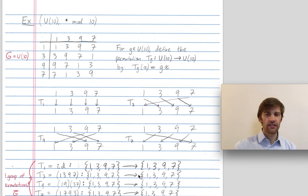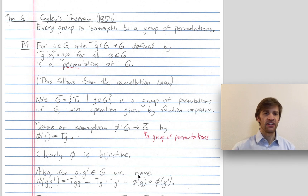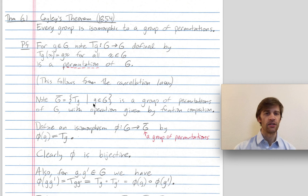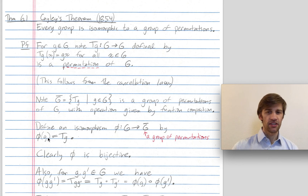All right, let me go back to the general proof — keep that example in mind though. Cayley's theorem says every group is isomorphic to a group of permutations. The proof is as follows: for every element little g in our group, we have this permutation T sub g, which permutes the elements of the group just by multiplying on the left by little g. G-bar, the collection of all permutations T sub g where g is in our group, is going to be our group of permutations that we'll show is isomorphic to G.